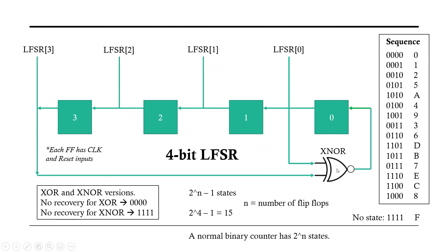And since this is an XNOR version, we are going to start it off at 0000, and then it'll count through all the values up to E, and it'll never go to F because that is the no recovery state for the XNOR. In comparison, a normal binary counter has 2^n states. So if you had a normal binary counter, you can count from 0 to F. This can only go from 0 to E. Let me show you the code.